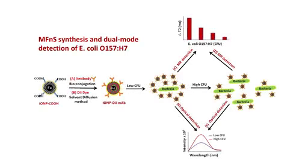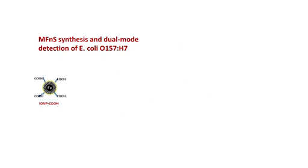Magnetofluorescent nanosensors are synthesized by functionalizing iron oxide nanoparticles via a two-step procedure. First, targeting antibodies are conjugated to the surface of the nanoparticle. Then, fluorescent dye is loaded into its coating. The pairing of these modalities allows for rapid and sensitive detection of bacterial contaminants in both low and highly concentrated solutions.